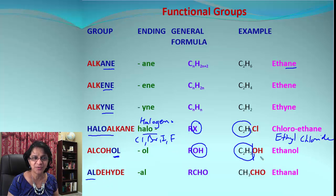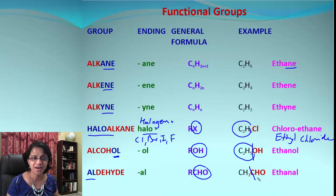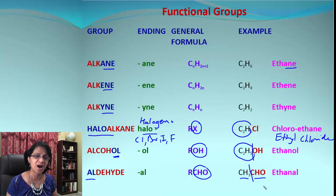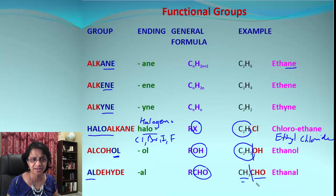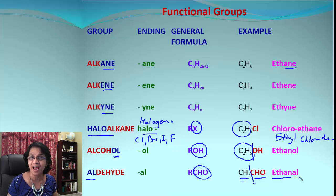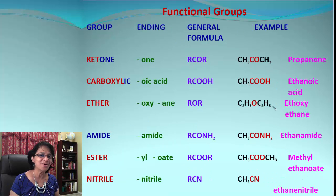Aldehydes all end in '-al' and the functional group is CHO. Look at the compound: CH₃CHO — that's CHO as the functional group. When we look at the parent name, we must count the carbon atom that also belongs to the functional group, so we get two carbon atoms. Two stands for 'eth,' so the parent name is ethane, and since it's an aldehyde we add '-al' — making it ethanal.